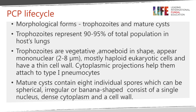There are two broad morphological forms of Pneumocystis: the trophozoite and the cyst. Those terms are typical of protozoal infections but are retained for Pneumocystis due to their long historical use. The vast majority — 90–95% — of organisms found in lungs are trophozoites. Trophozoites are vegetative and amoeboid in shape. They appear mononuclear, are relatively small, and are mostly haploid, meaning they have one genome. They have a thin cell wall that does not stain well, so trophozoites can be missed on microscopy. Cytoplasmic projections help them attach to type I pneumocytes.